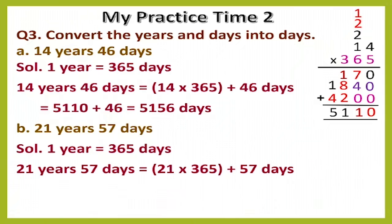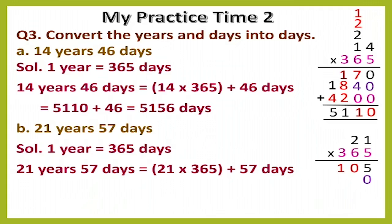One year is equal to 365 days, so 21 years will be equal to 21 × 365 days, and we also have 57 days to add. Now let's multiply: 5 ones are 5, then 5 twos are 10, write 10. Then put 1 zero and multiply 6 by 21: 6 ones are 6, then 6 twos are 12.